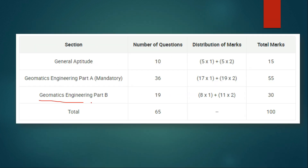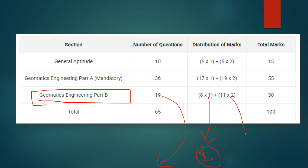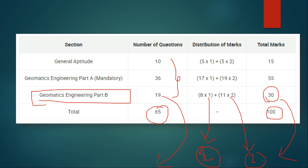Regarding the marking scheme of Part B, there will be 19 questions — 8 of one mark and 11 of two marks — giving a total of 30 marks from here. So the total number of questions in GATE Geomatics Engineering will be 65, and you will get a total of 100 marks from those 65 questions.